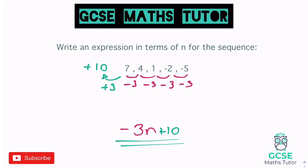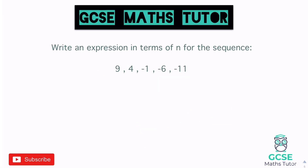As a side note, −3n + 10 can also be written as 10 − 3n — both mean the same thing. Writing it as 10 − 3n is quite a common way to reduce the number of symbols. You'll see the nth term written both ways, so be aware of both forms.